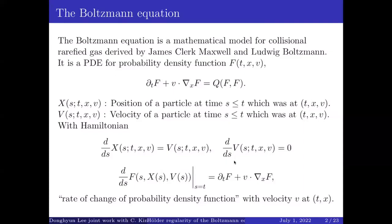The Boltzmann equation is a mathematical model for collisional rarefied gas derived by the famous physicists Maxwell and Boltzmann. It is a partial differential equation for a probability density function, say capital F, defined on time, space, and velocity. It is a balance equation between free transport of F and the collision operator on the right-hand side. We will mainly use the characteristic (T, X, V).